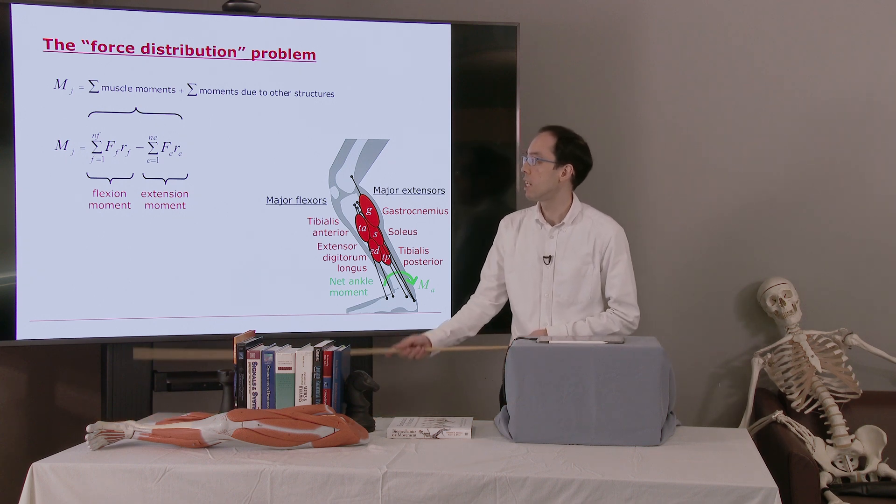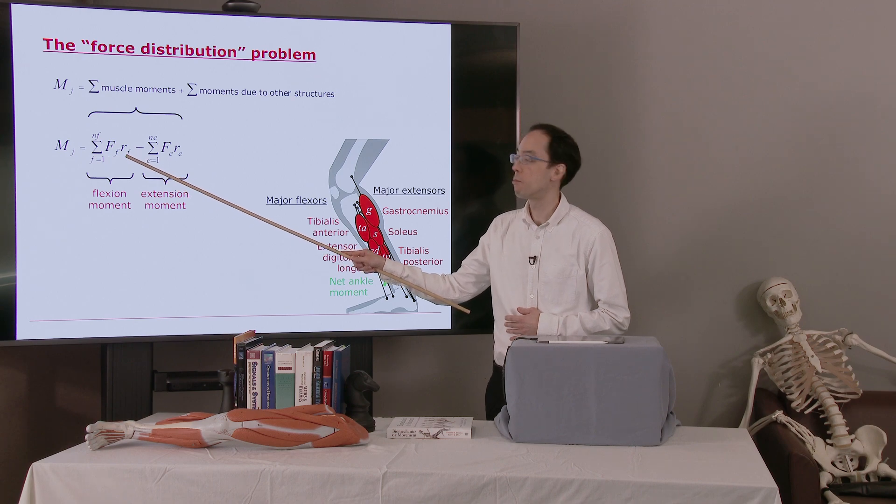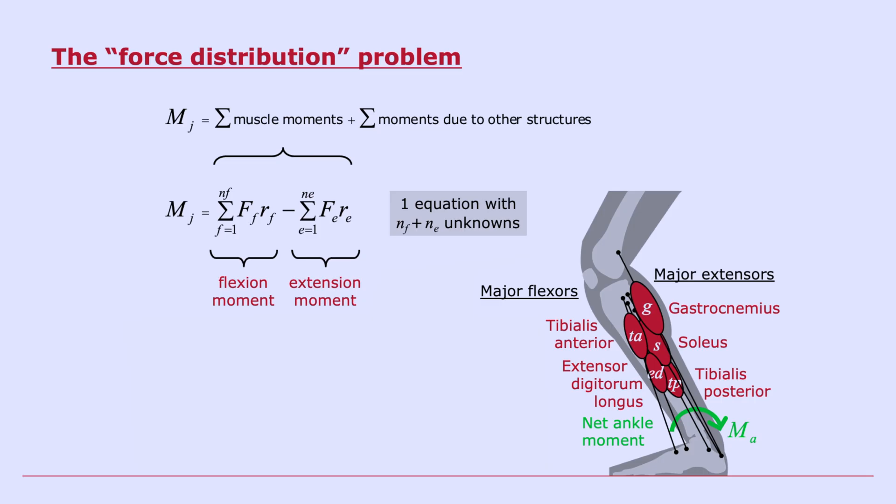And the moment that each muscle generates, remember back from chapter six, we have the force times the moment arm. So here we have one equation and we have a whole bunch of unknowns. We have the contribution from each one of the muscles. All those are unknowns. So how are we going to solve this problem? So we have way more unknowns than equations. How are we going to solve this system?